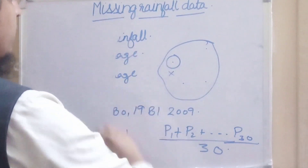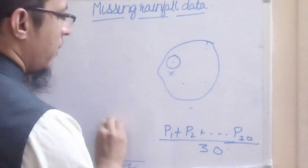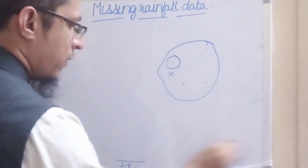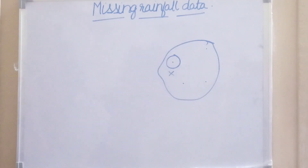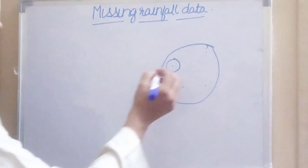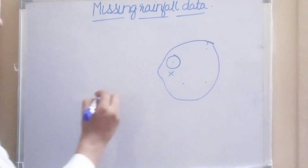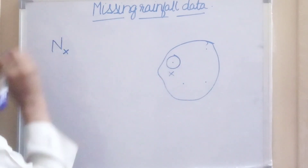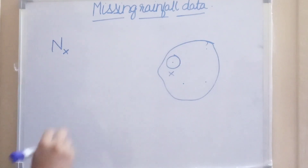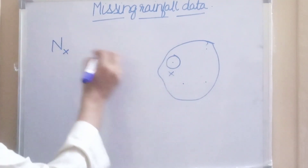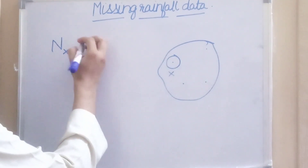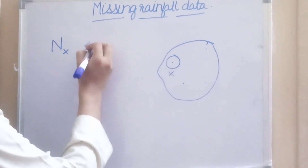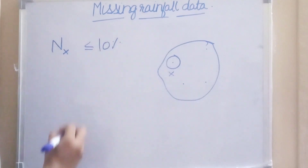To calculate the missing data at a gauging station we require two things: one is the rainfall data of the neighboring stations, and the other is the normal annual rainfall data of those gauging stations. If the normal rainfall of the station where data is missing — let us call it Nx — is within 10 percent of all other stations, that is the difference in normal rainfall of the four stations is less than 10 percent, then we can simply average the rainfall data.